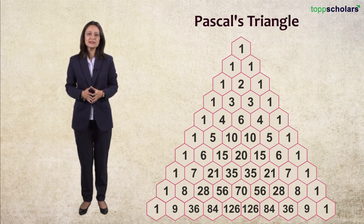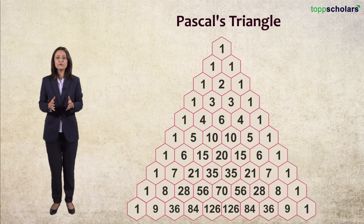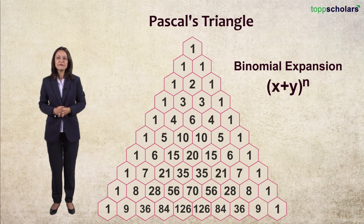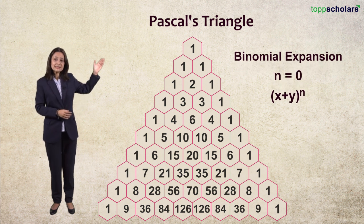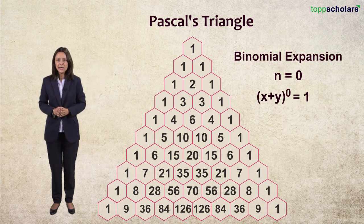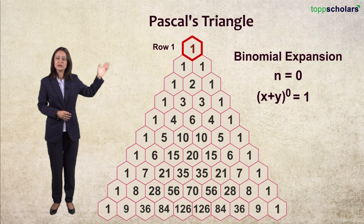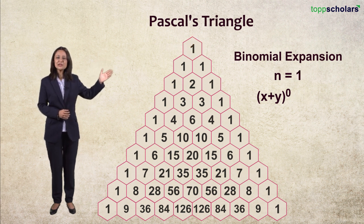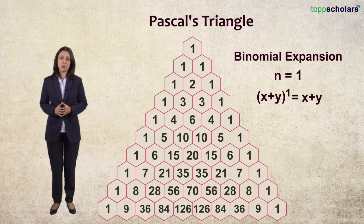Well, each row in Pascal's Triangle forms the coefficients of binomial expansion (x + y) raised to the power n. Let's check for different values of n. When n is 0, we have (x + y) raised to the power 0, which equals 1, which is the first row of Pascal's Triangle. When n is 1, we have (x + y) raised to the power 1, which is equal to x + y.